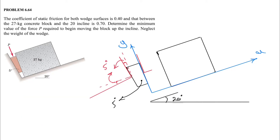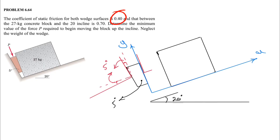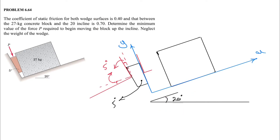Welcome back. In today's question we have a concrete block and a wedge. The coefficient of static friction for the wedge surfaces is 0.4, and the static friction between the 27-kilogram concrete block and the incline — which makes 20 degrees with the horizontal — is 0.7. We need to determine the minimum value of force P to start moving the block up the incline. We can neglect the weight of the wedge.